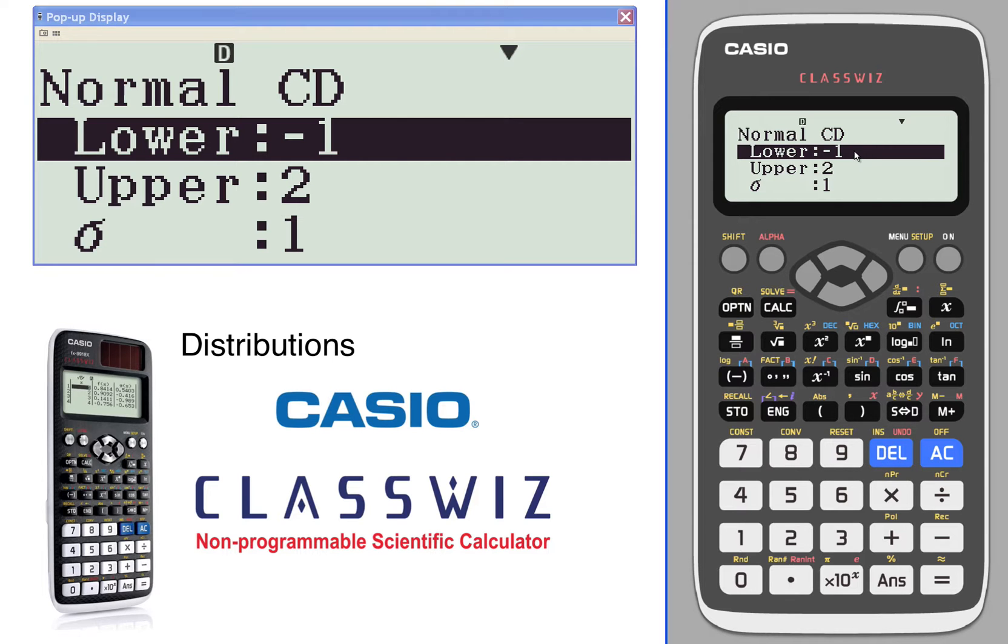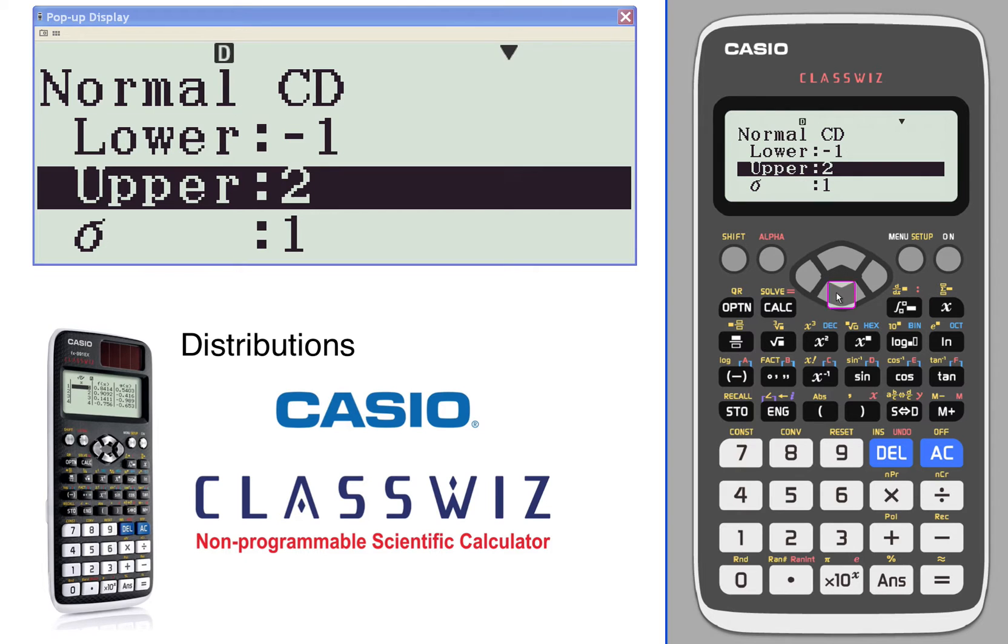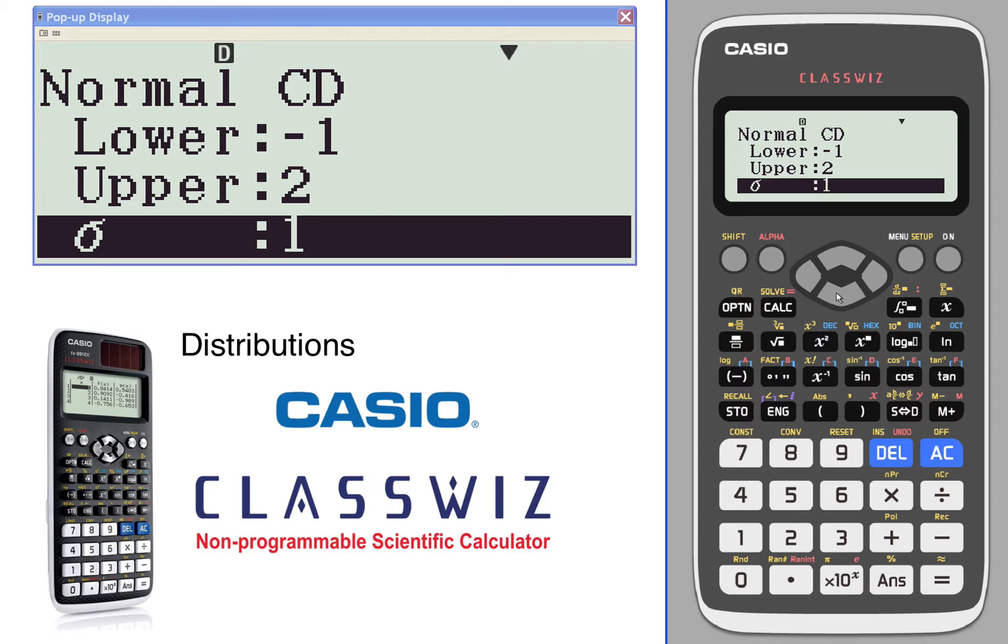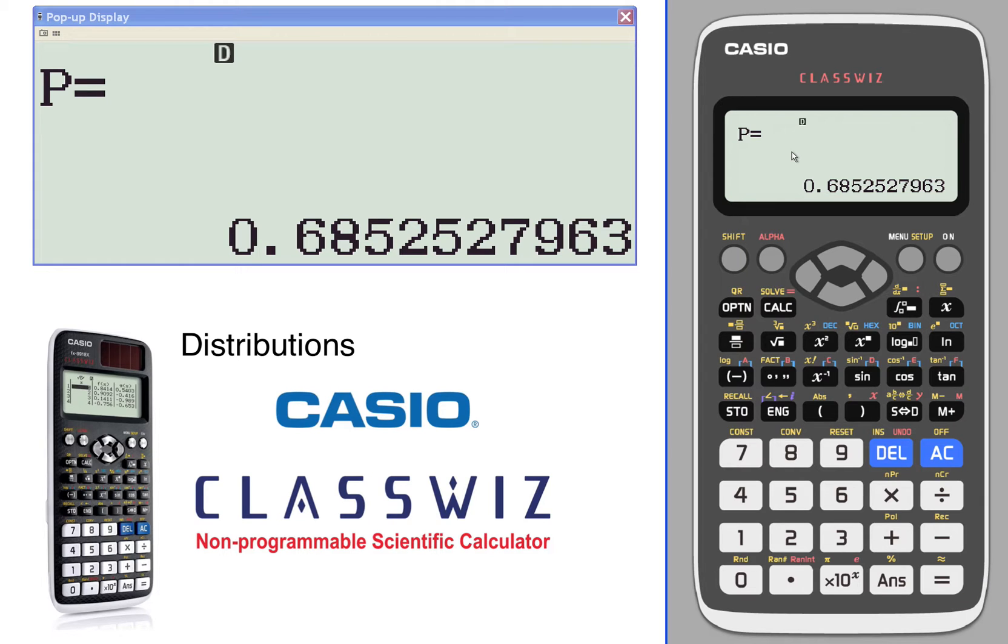If you want to look at the lower value going to the left forever, put in a negative number that's large. Same thing for upper if you wanted to look for area to the right with a standard deviation of one and a mean of 1.5. So we'll go ahead and calculate that area between negative one and two. There's your area with the standard deviation of one and mean of 1.5.